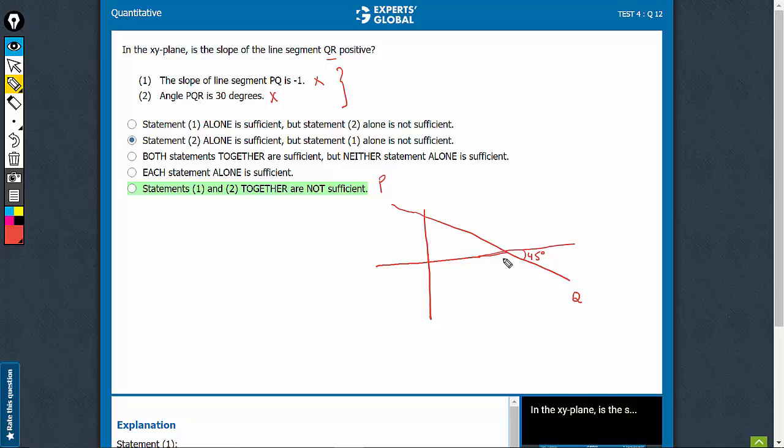Now PQR is, this angle is 30 degrees, PQR. Now if this is 30 degrees in, let's say, this direction, something like this, 30 degrees, this leads to a negative slope.